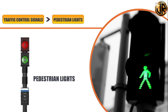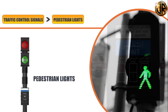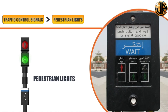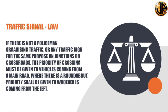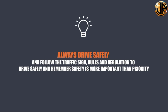Pedestrian lights or signals are used to help pedestrians cross the road in a controlled manner, commonly found at intersections or junctions. Pedestrians may press the button and wait for the lights to change to the green walking signal; before crossing, make sure the vehicles have stopped. If the pedestrian green signal flashes, do not begin to cross. The law states that if there is no policeman organizing traffic or any traffic sign, the priority of crossing must be given to vehicles coming from a main road. Where there is a roundabout, priority shall be given to whoever is coming from the left — Article 8, UAE Federal Traffic Law Number 21, 1995. Always drive safely and follow traffic signs, rules and regulations, and remember: safety is more important than priority.